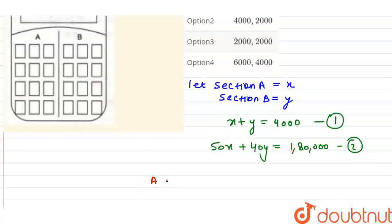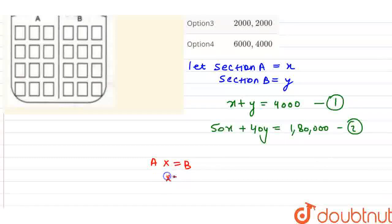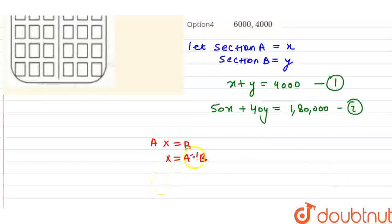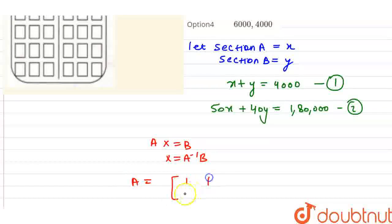The matrix form is Ax equals B. Matrix A is [1, 1; 50, 40]. Matrix B is [4000; 180,000]. And matrix X is [x; y].